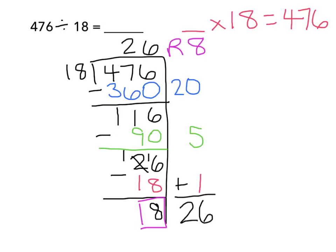Notice how I have put my factors directly next to the product that they go with. So 20 is next to 360, 5 is next to 90, and 1 is next to 18.